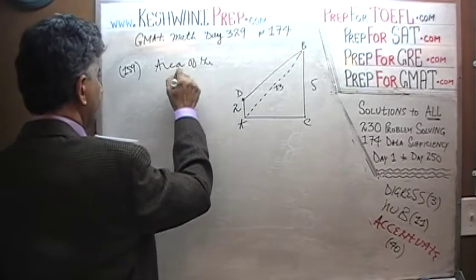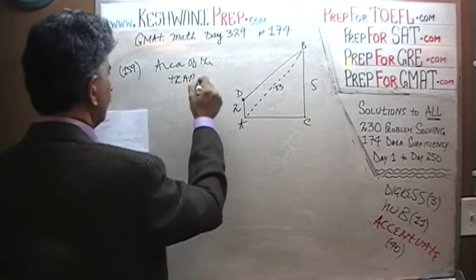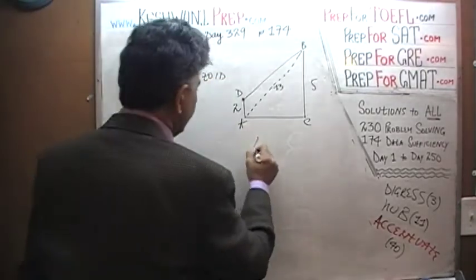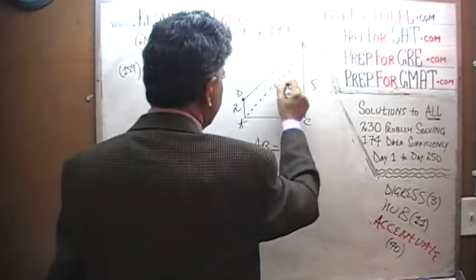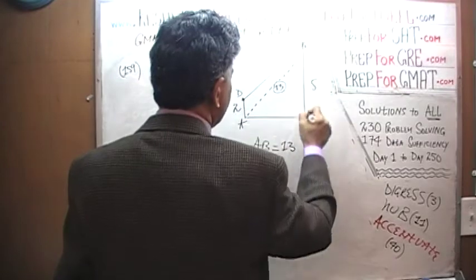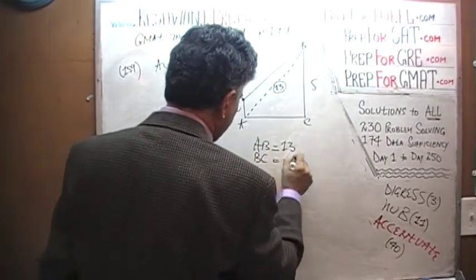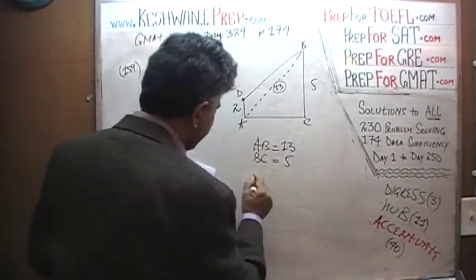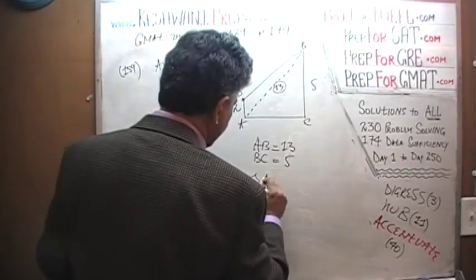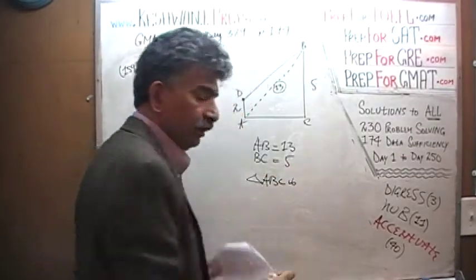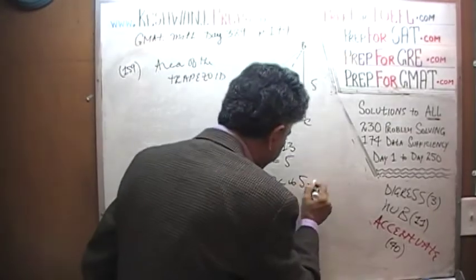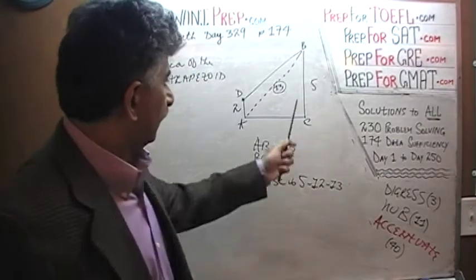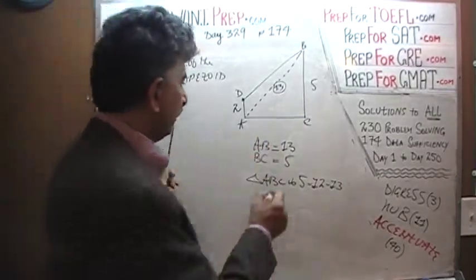Area of the trapezoid. First thing first — if A to B is 13 and we are told that B to C is 5, then what we are dealing with in triangle ABC is what is known as a 5-12-13 triangle. In other words, if one side is 5 and the other side is 13, this side would have to be 12. So A to C is 12.